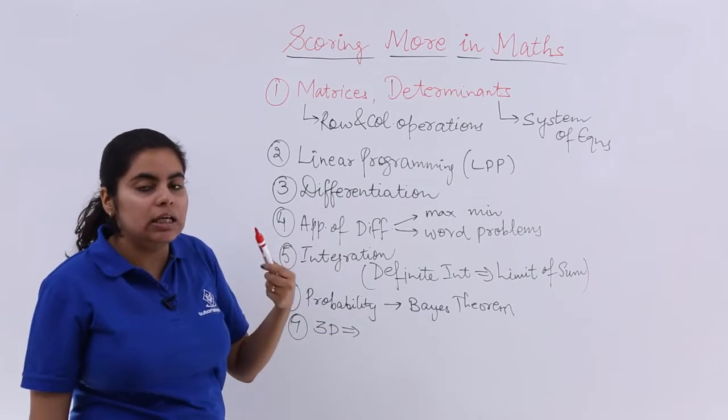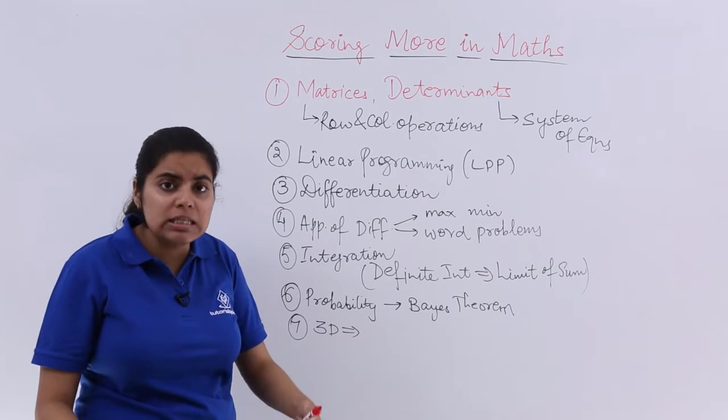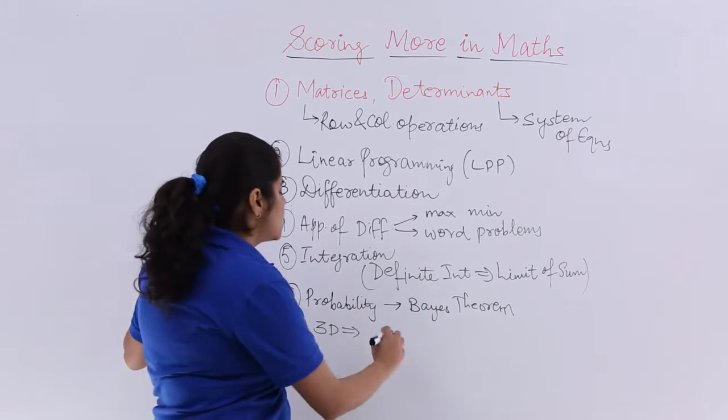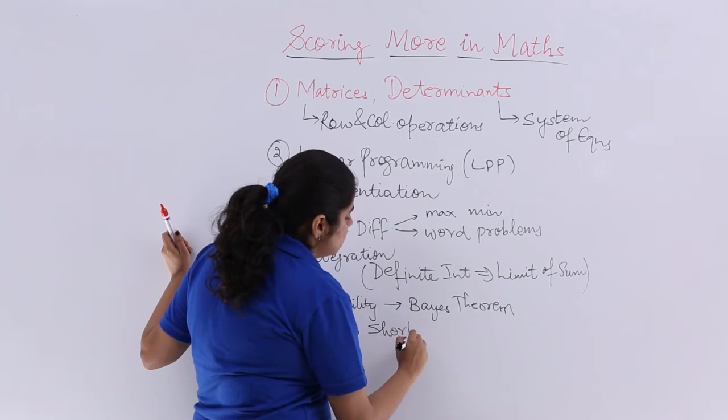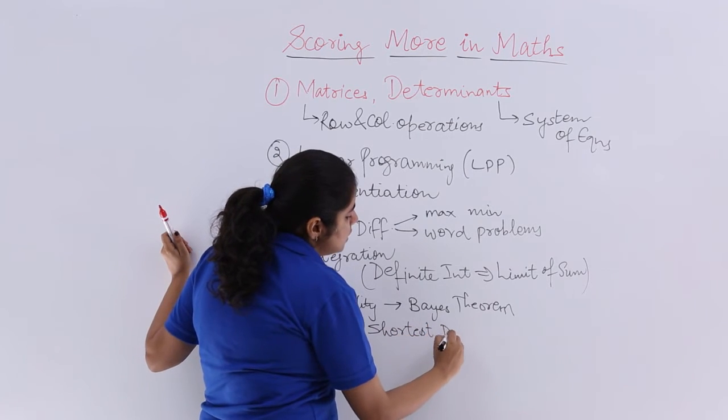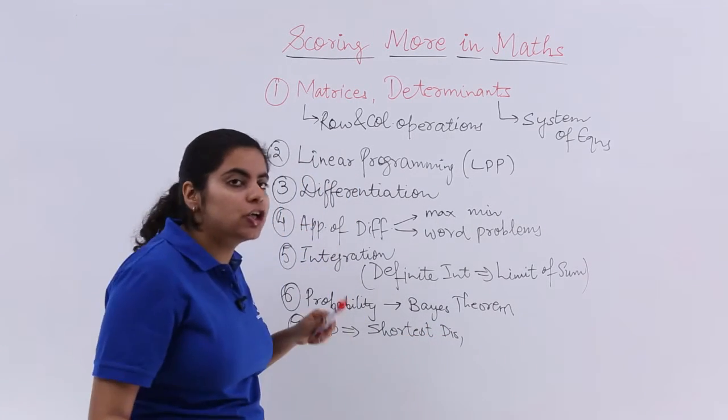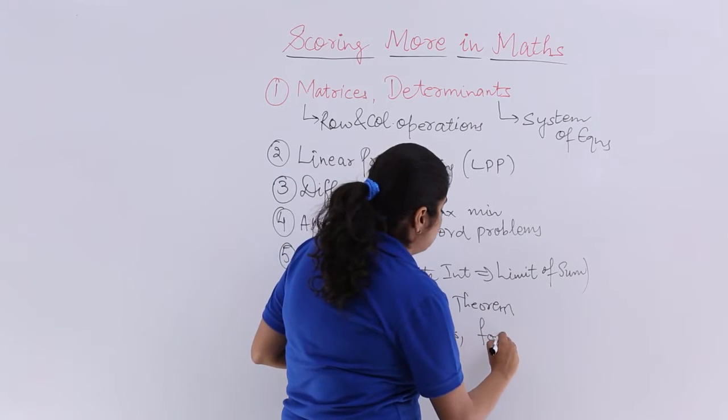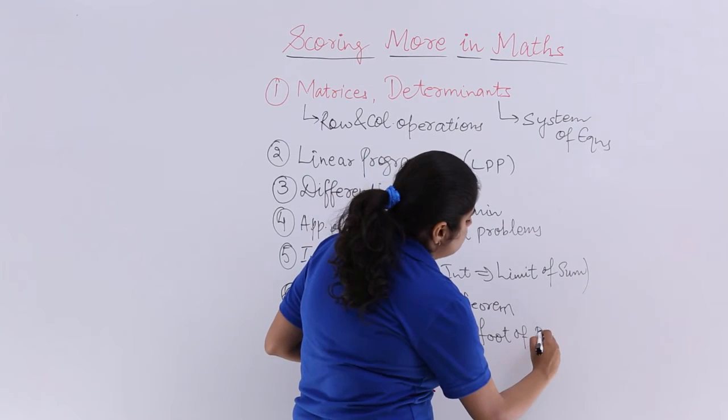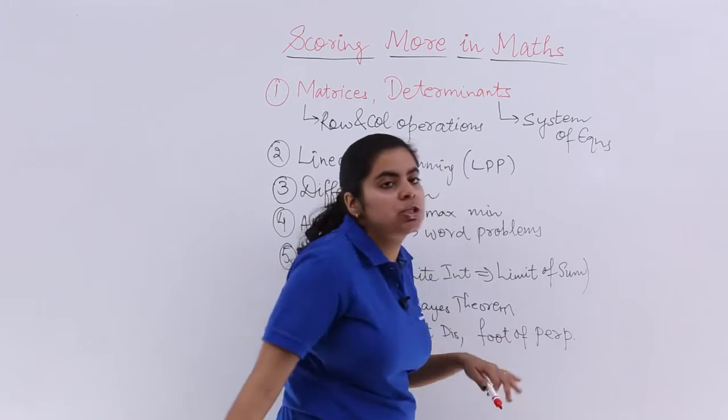Last would be your 3D. So in 3D, basically, this is a chapter which is easy if you understand it properly. So focus on your shortest distance or focus on your, according to me, foot of the perpendicular, these type of questions.